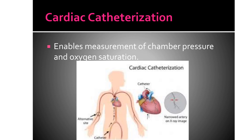It obtains information about the structure and performance of the heart chambers, together with valves and coronary circulations. The catheter is inserted into the femoral vein and advanced into the inferior vena cava, then to the right atrium, right ventricle, and into the pulmonary artery.